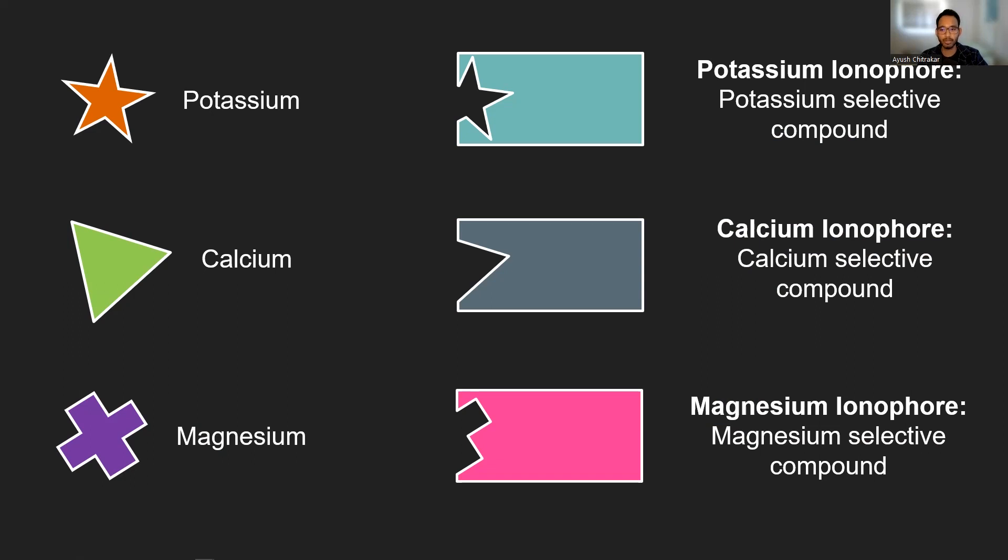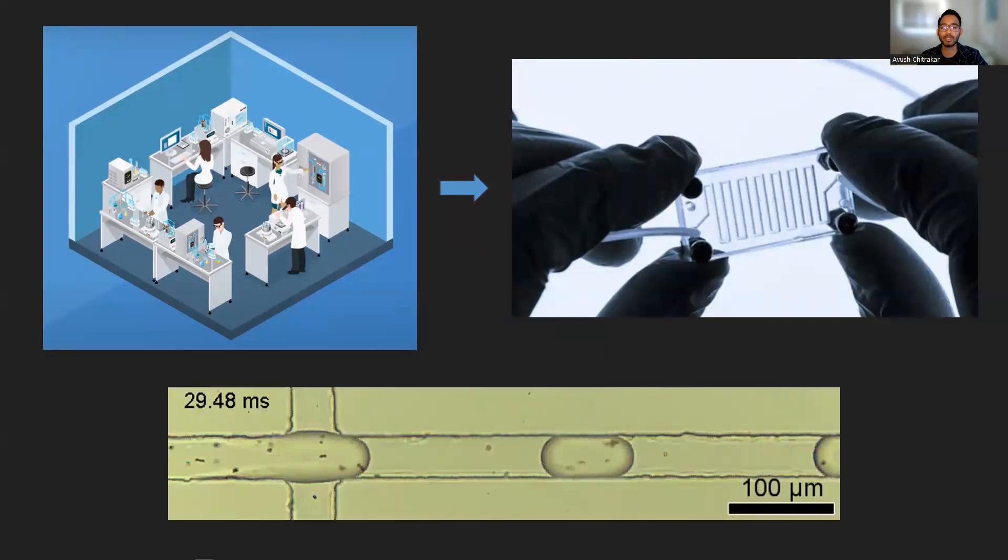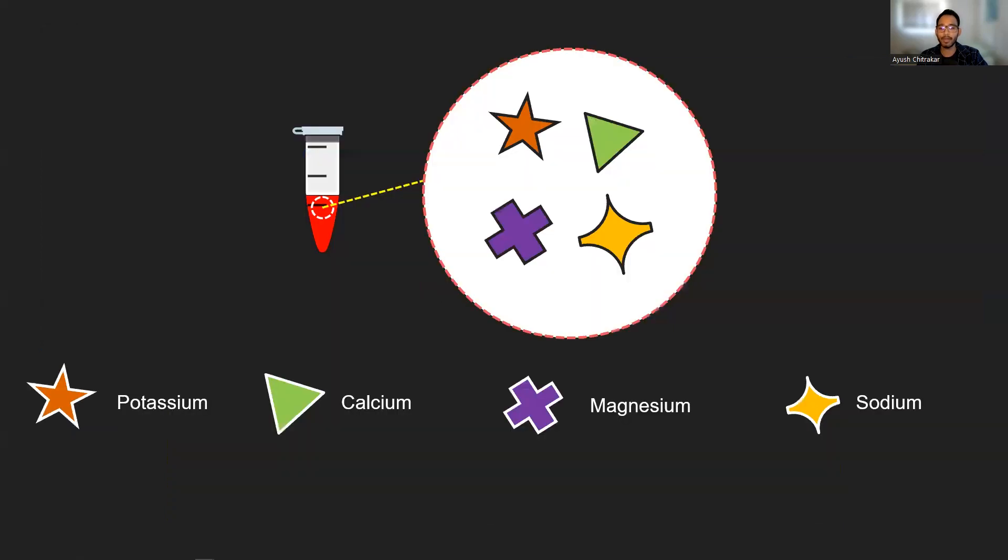In conclusion, microfluidics is a powerful tool that can miniaturize a lot of lab equipment down to a small chip and significantly speed up the experimental process. My research focuses on the use of droplet microfluidics to eventually measure the amount of electrolytes in blood by using a very small amount of blood. However, as of right now, I've developed a potassium and calcium selective oil that can measure the amount of potassium and calcium in a buffered solution.